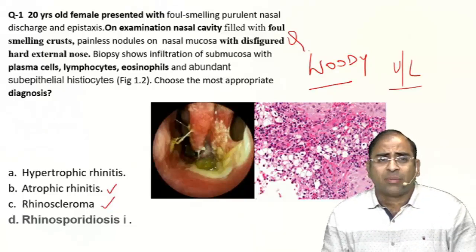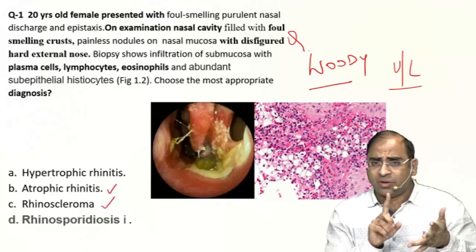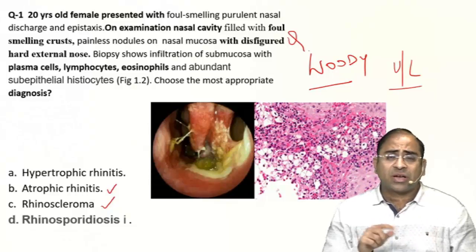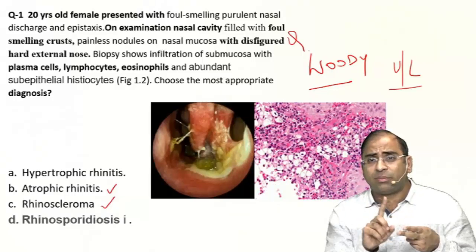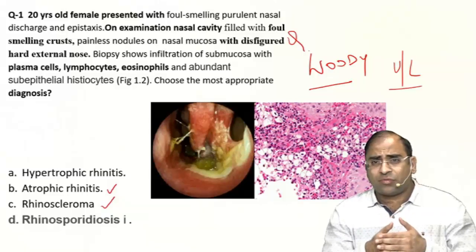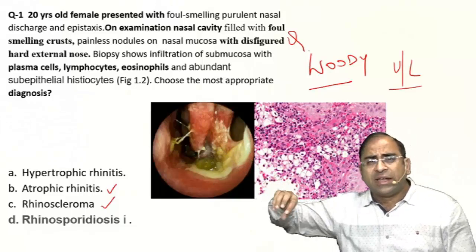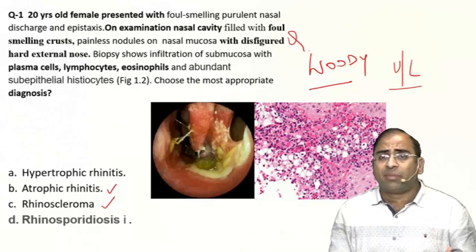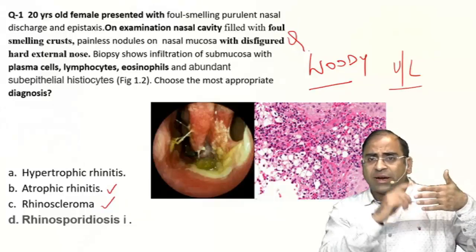Coming back to treatment: first we diagnose with history, then biopsy, then treatment. Klebsiella with a capsule is associated with rhinoscleroma, so we go for streptomycin and tetracycline. Whether it is atrophic rhinitis or rhinoscleroma, remember Klebsiella with capsule is associated with both conditions, so drug of choice is streptomycin and tetracycline. For rhinosporiosis, there is a polypodial mass, so we have to do surgery. The management of rhinosporiosis is always surgical.